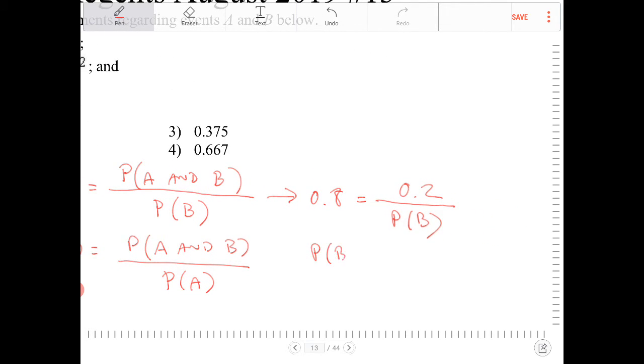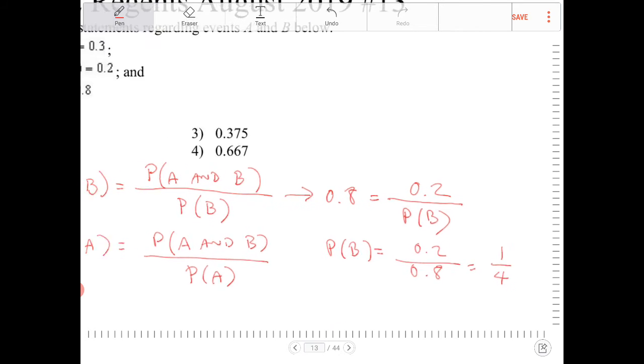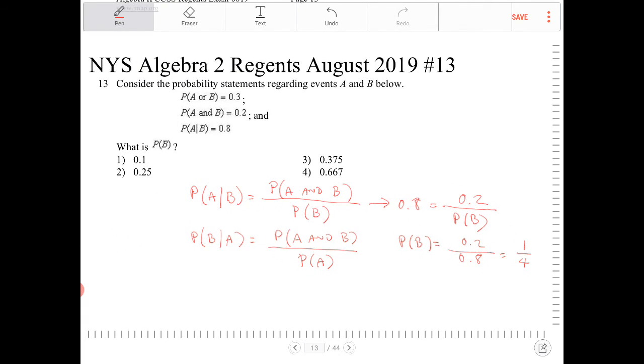Probability of B will equal 0.2 over 0.8, which is equal to one fourth, or probability of B is equal to 0.25.